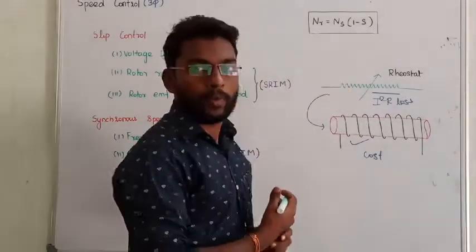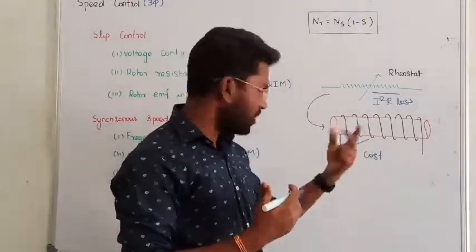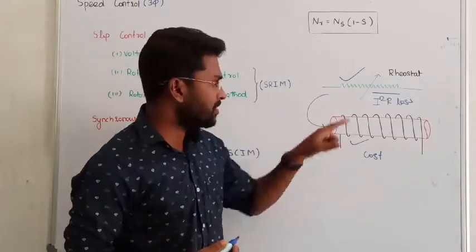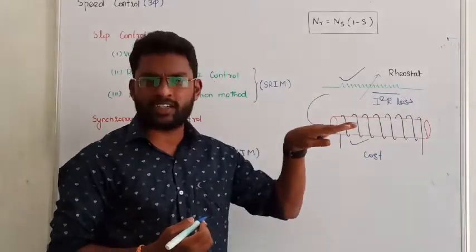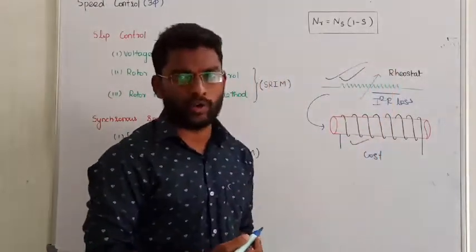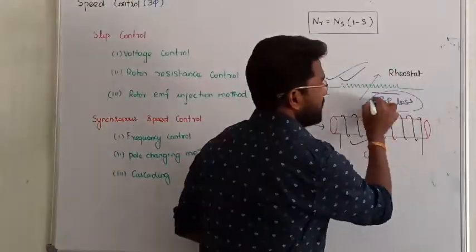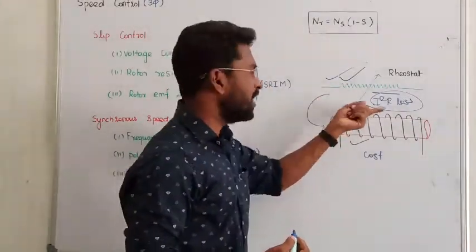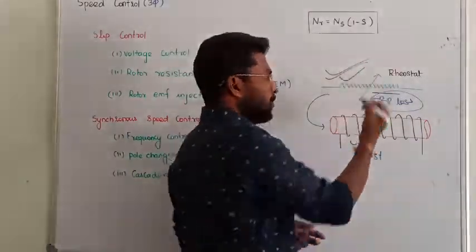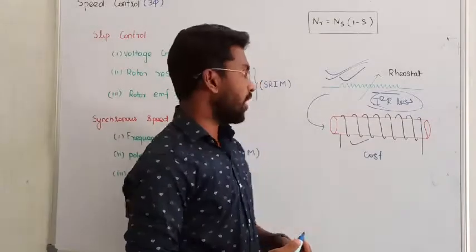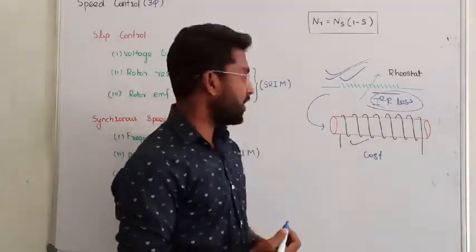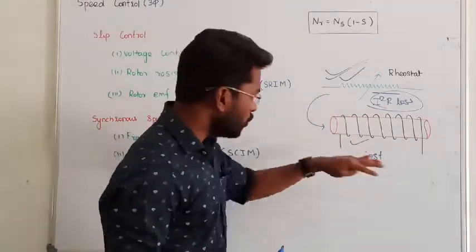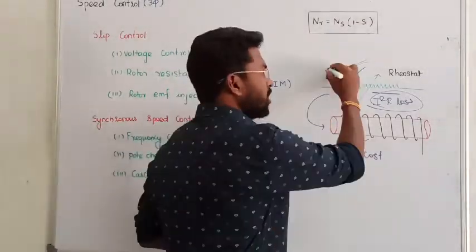If we compare the losses, we are going to prefer the direct start. Because when we start, there are losses — we will face those losses. If we compare losses and this method is too costly, we can give preference to the direct start instead. There is no problem.